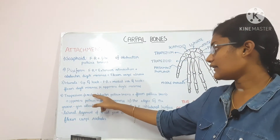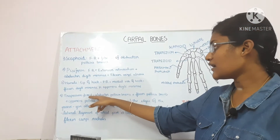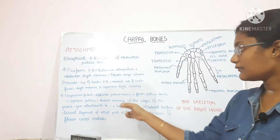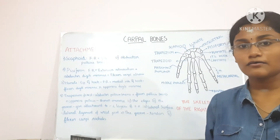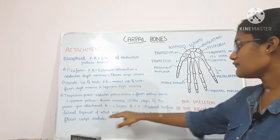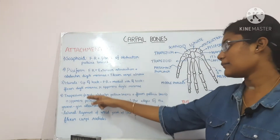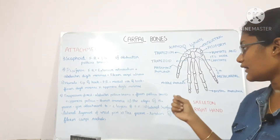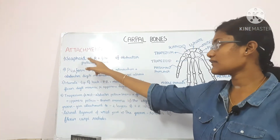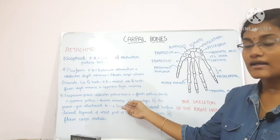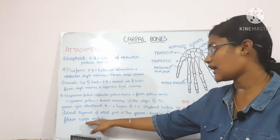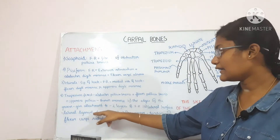The trapezium gives attachment to four things. First, the crest gives attachment to the abductor pollicis brevis, flexor pollicis brevis and opponens pollicis — these three muscles form the thenar eminence. The groove edges give attachment to the two layers of the flexor retinaculum and the groove itself gives attachment to the tendon of the flexor carpi radialis. The lateral surface of the trapezium gives attachment to the lateral ligament of the wrist joint. Flexor retinaculum is present in all four bony pillars.